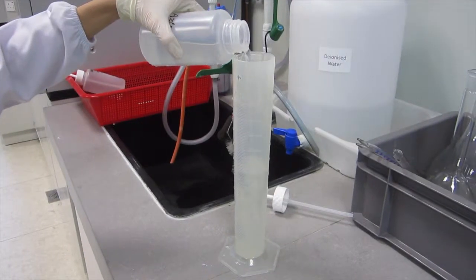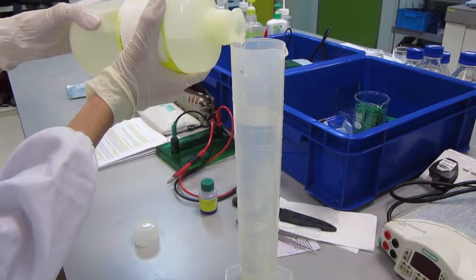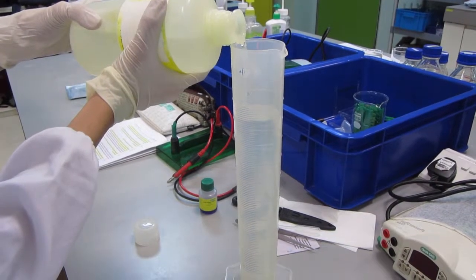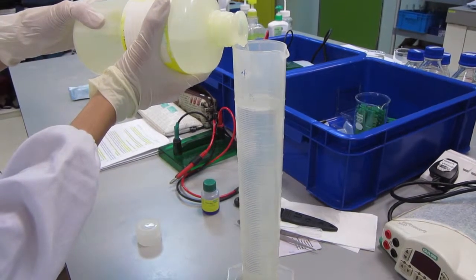Using a measuring cylinder, measure 450 milliliters of distilled water and top up with 50 milliliters of the tris-glycine SDS solution. This will form the electrophoresis buffer.